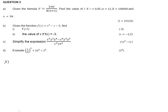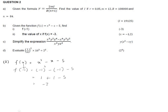Question 2b: given f(x) = x² - x - 5, find f(-1). Replace every x with -1: (-1)² - (-1) - 5 = 1 + 1 - 5 = 2 - 5 = negative 3.